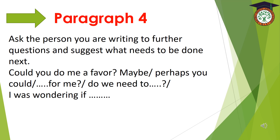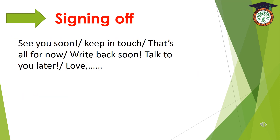This is the last paragraph you are going to write in an informal letter. Here, we are going to sign at the end of the letter by using some words such as: 'See you soon', 'Keep in touch', 'That's all for now', 'Write back soon', 'Talk to you later', 'Love'. And then, we are going to write our name.